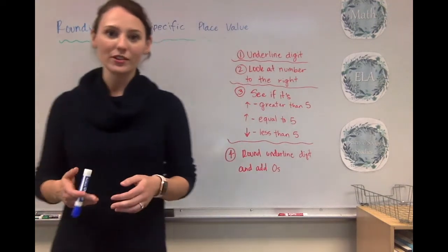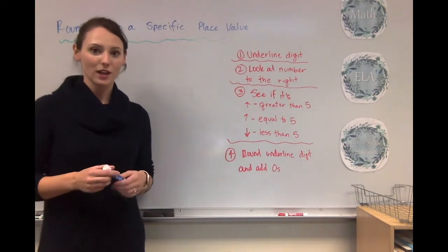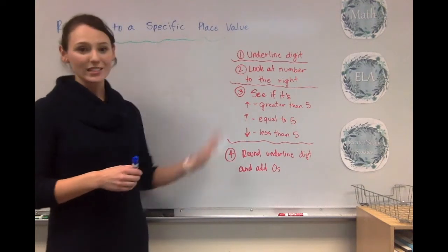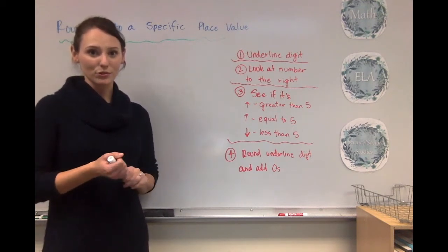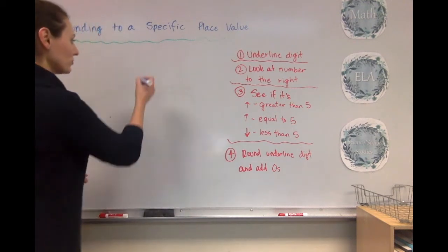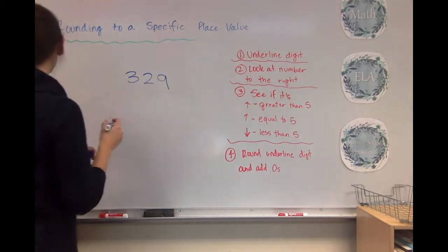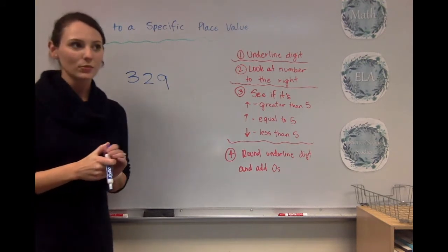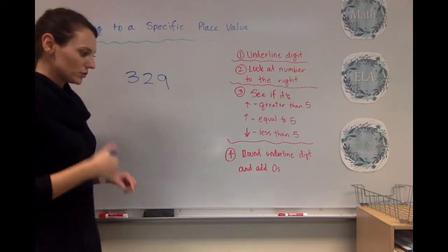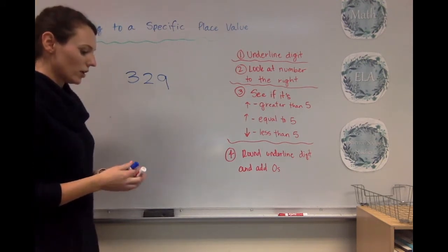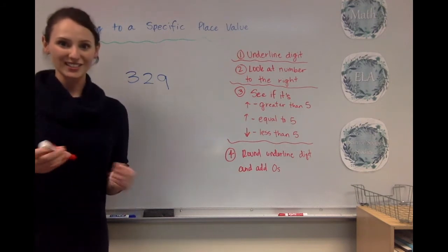So like I said, we're going to be rounding to a specific place value today. However, the steps are still the same, so I left these up on the board for us to follow. Okay, so our first number is 329. And for this number, let's say we're going to round to the tens place.